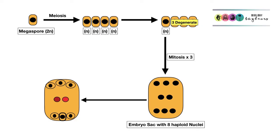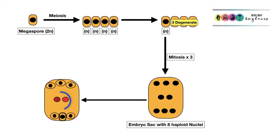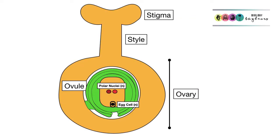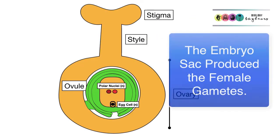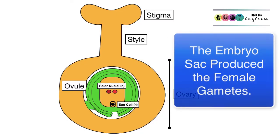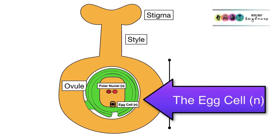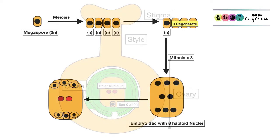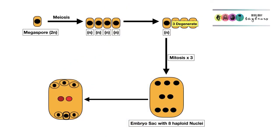Of those six nuclei with their own membrane, one will become the egg cell and the other five will die off or degenerate. The other two nuclei that did not develop their own membrane are the polar nuclei. Female gamete formation is now complete — the embryo sac produced the egg cell, which is haploid, and those two polar nuclei, which are both haploid.